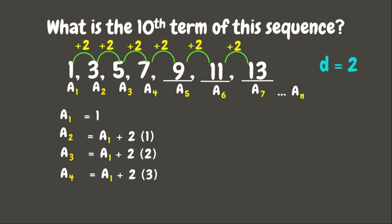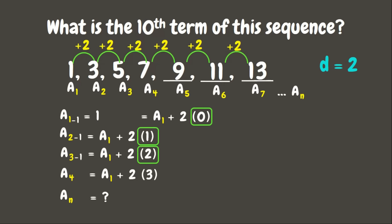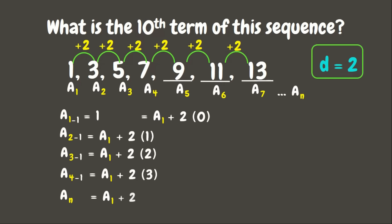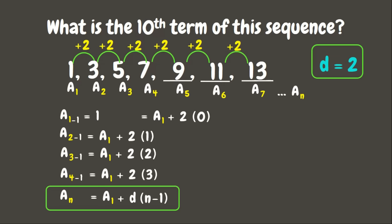We can see that we didn't add 2 to get the first term, so a sub 1 = a sub 1 + 2×0. We notice that if we subtract 1 from the term number n, we get the number of times we add 2. Therefore, our formula is: a sub n = a sub 1 + d × (n − 1), which is our nth term rule for this sequence.